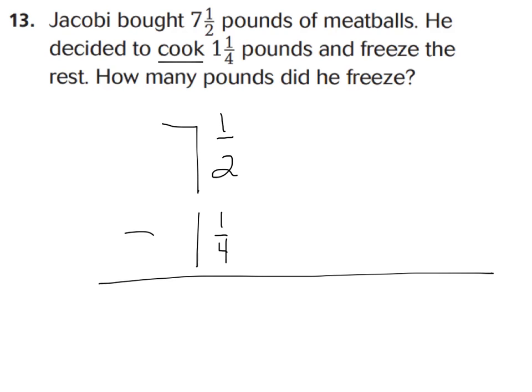Go ahead, pause the video. And I want you to find an equivalent fraction for 1 half and 1 fourth. And subtract. And let's see if our answers agree. Okay boys and girls, you should have found equivalent fractions that have the same denominator as 4 because 1 fourth can stay the same but 2 times 2 is 4 so 1 times 2 is 2. So you should have 7 and 2 fourths because 2 fourths is the same thing as 1 half and we can take away 1 and 1 fourth. Now let's take away 2 and 1 fourth minus 1 fourth. Remember, keep our denominator the same and 2 minus 1 is 1 and then let's subtract our whole numbers. 7 minus 1 is 6. So if you said that there was 6 and 1 fourth pounds left to freeze, you are absolutely right.